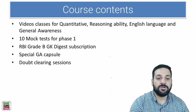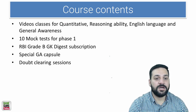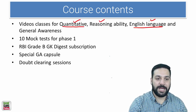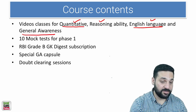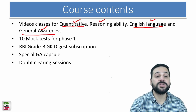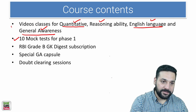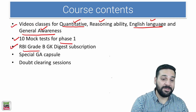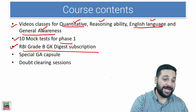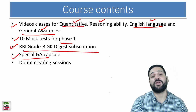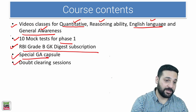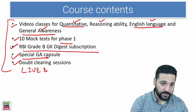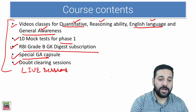In the Phase 1 course you'll find courses for Quantitative Aptitude, Reasoning Ability, English Language, and General Awareness. It also includes the full length mock test series for Phase 1, an RBI Grade B GK digest subscription, a special GA capsule for the Phase 1 exam, doubt clearing sessions, and we are also going to conduct live sessions as well.